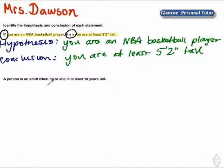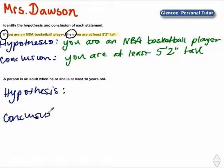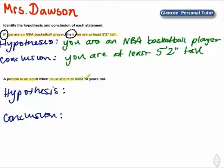A person is an adult when he or she is at least 18 years old. We are looking for the hypothesis and also the conclusion. A little more difficult because there isn't an if/then to fall back on. Let's try to fit this in an if/then: if a person is at least 18 years old, then the person is an adult.